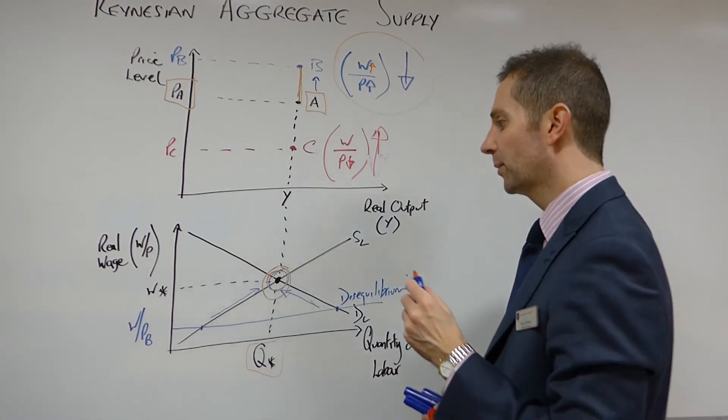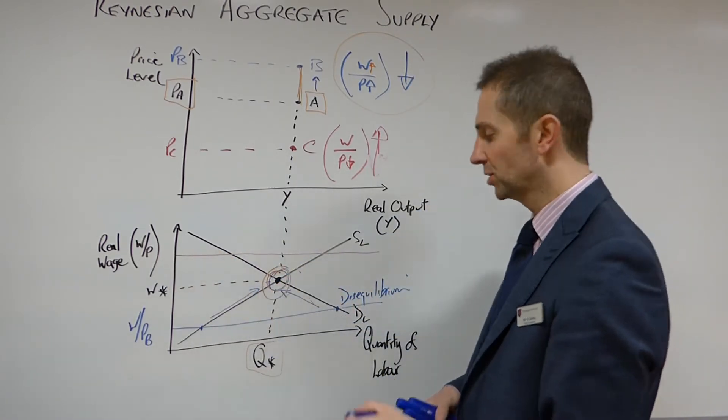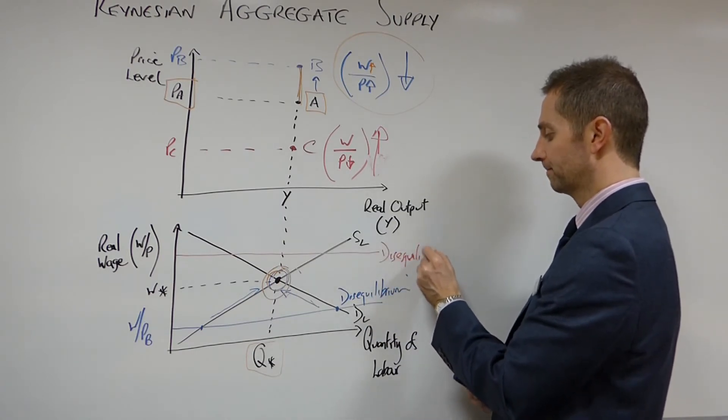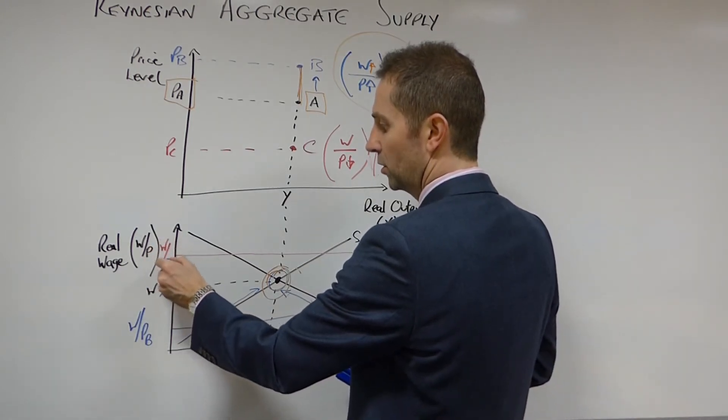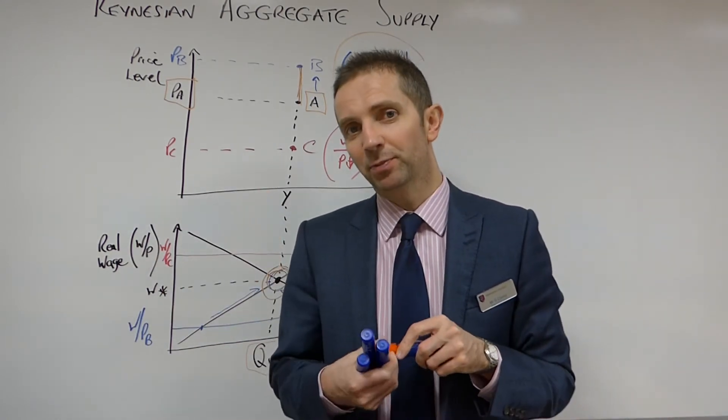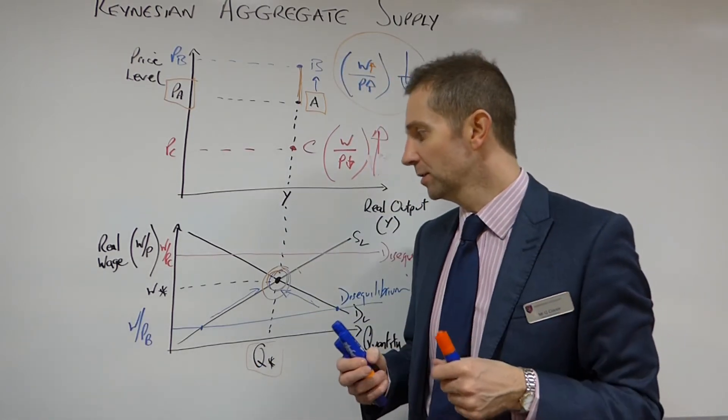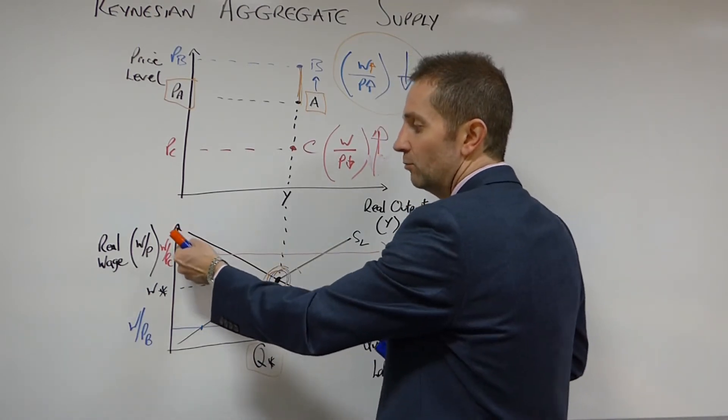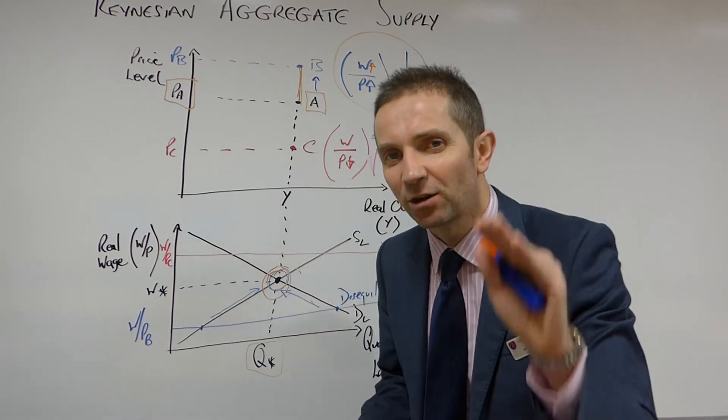So where would that put us on our labour market diagram? Once again, we will be above equilibrium position. This will be another point of disequilibrium in the labour market. And we'll be at this price, W over P C. Now, you'll remember, and if you've watched my previous video with regard to classical economists, classical economists would argue that the market is so flexible that it will even adjust from this relatively higher real wage back to equilibrium. But Keynesians argue something different.